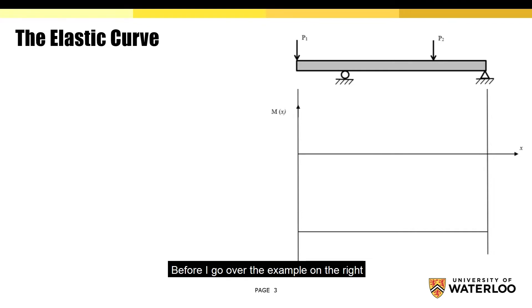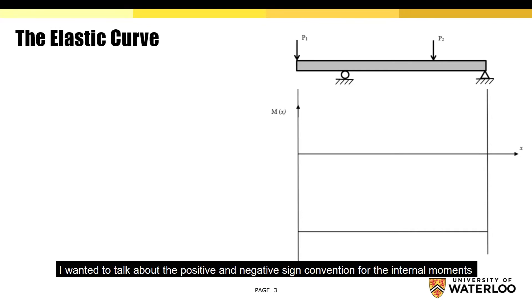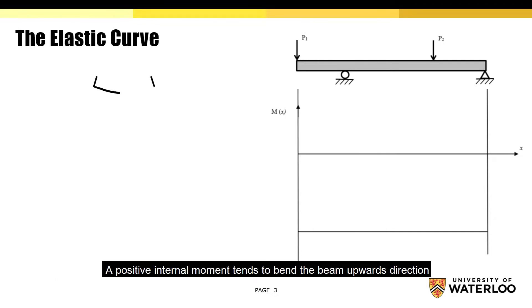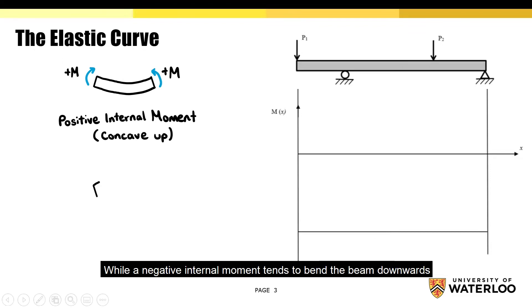Before I go over the example on the right, I want to talk about the positive and negative sign convention for the internal moments. A positive internal moment tends to bend the beam in the upwards direction, while a negative internal moment tends to bend the beam downwards.